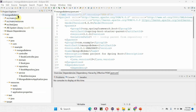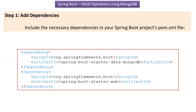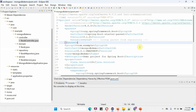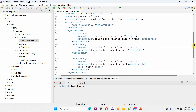Here you can see the MongoDB demo project and its folder structure. Now we will see what steps are involved in Spring Boot and MongoDB connectivity. Step one is to include the necessary dependencies in the Spring Boot project's pom.xml file. There are two dependencies to add: the first is Spring Boot Starter Data MongoDB, and the second is Spring Boot Starter Web. Here you can see the pom.xml file with those dependencies.